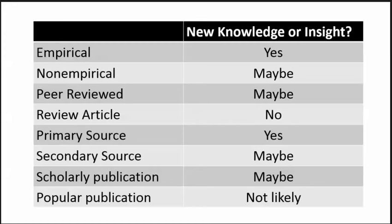Another way to think about the types of information sources is to ask if they contain new knowledge or insight. We don't want to eliminate a source if it is not in a primary or empirical source, though. Review articles or reviews in other forms can provide a helpful overview of the topic.